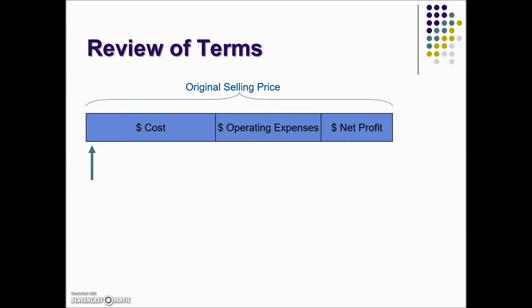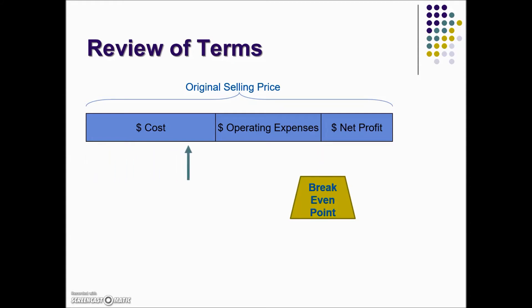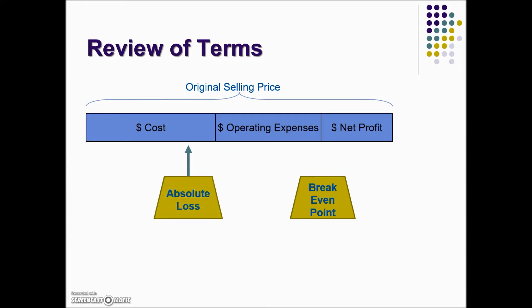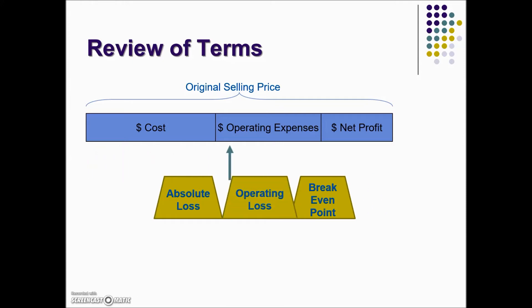Let's take a look at the review of terms. If the selling price lands at the break-even point, we have a break-even. If the selling price falls below cost, we have an absolute loss. If the selling price is between cost and break-even, we have an operating loss. And if it's above break-even, we have a reduced net profit.